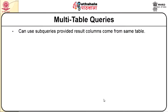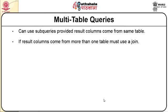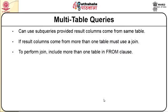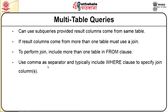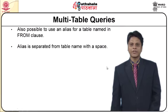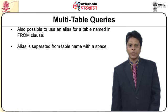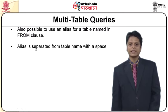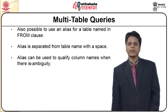We will now indicate multi-table queries. Multi-table queries can use subqueries provided result columns come from the same table. If result columns come from more than one table, we must use joins. To perform a join, we include more than one table in the FROM clause, using a comma as a separator, and typically include a WHERE clause to specify the join columns. It is also possible to use an alias for a table name in the FROM clause, separated from the table name with a space. Aliases can be used to qualify column names when there is ambiguity.